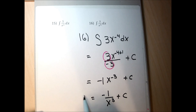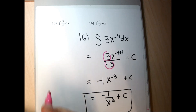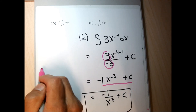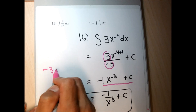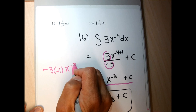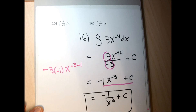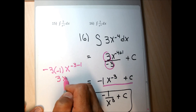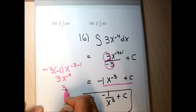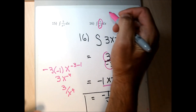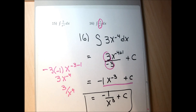I rewrite that as negative 1 over x cubed plus C. Checking by taking the derivative: negative 3 times negative 1 gives 3, x to the negative 3 minus 1 is x to the negative 4, and the derivative of C is 0. So the derivative is 3x to the negative 4th, which is 3 over x to the 4th — exactly what was between the integral sign and the dx. Answer for 16 is correct.